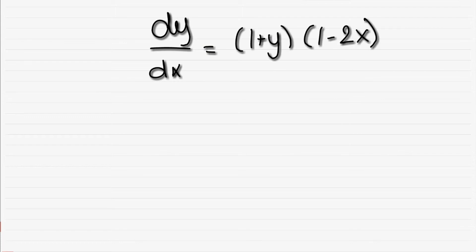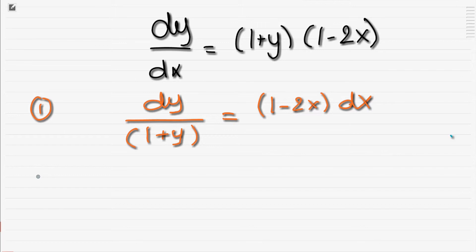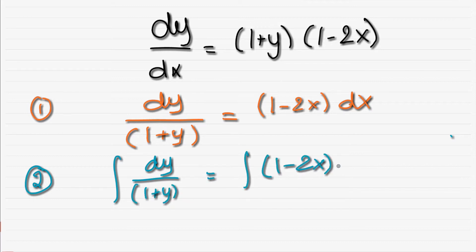We're given that dy/dx is (1+y)(1-2x). So we're going to follow our steps. First step is isolate the y's, so dy divided by (1+y), here we have a y, and the other side will be (1-2x) into dx. That was our first step. Our second step is to simply add the integral sign, so this will be like this, and this will be the same way. Then we're going to integrate.